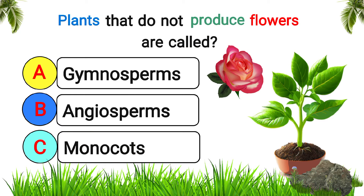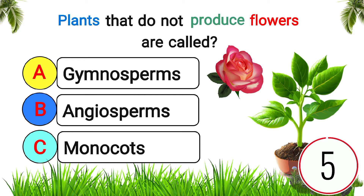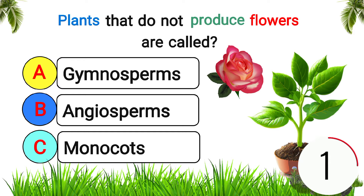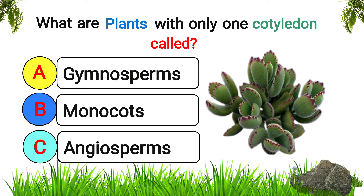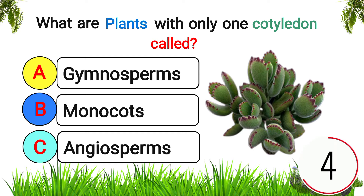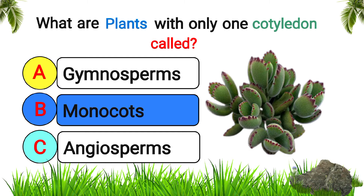Plants that do not produce flowers are called? Answer: gymnosperms. What are plants with only one cotyledon called? Answer: monocots.